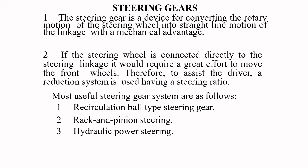Without the steering gear, it can still be connected but requires great effort by the driver to move the front wheels. Therefore, to assist the driver, a reduction system in the form of a gearbox is used. This reduction system converts the rotary motion of the steering wheel into straight-line motion of the linkage with mechanical advantage. There are three types of steering gear systems: recirculating ball type, rack and pinion, and hydraulic power steering.